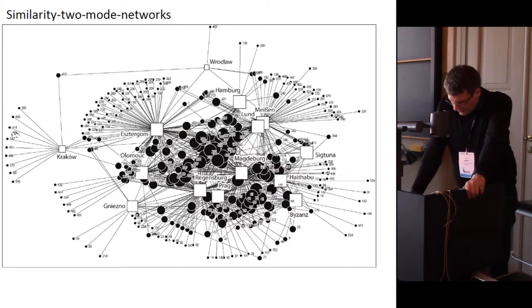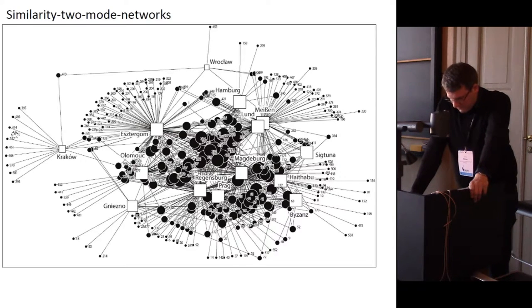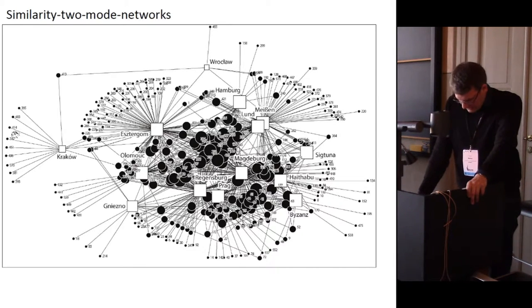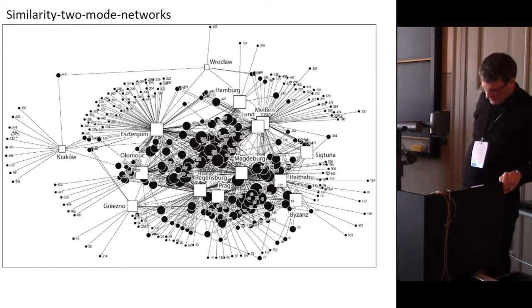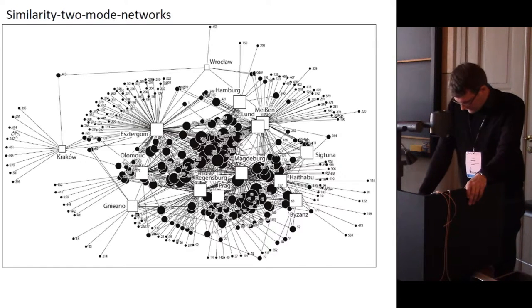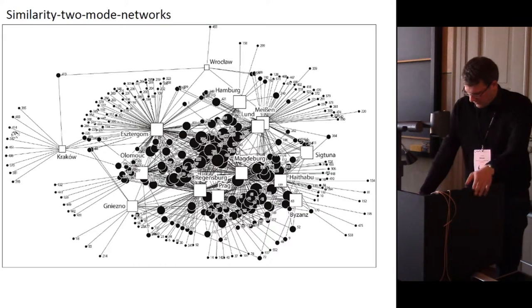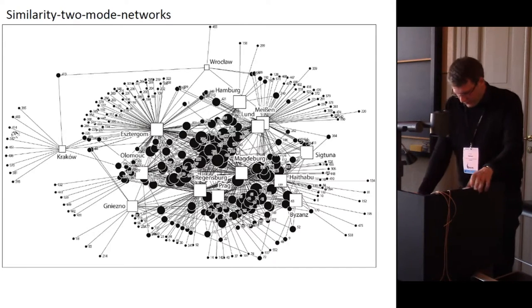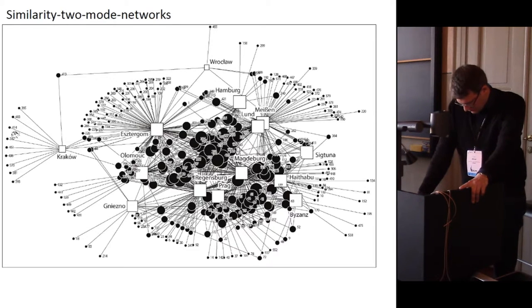Another possibility for generating networks, other than through neighborhood networks based on physical distance, is through similarities of the composition of coin finds. The individual coin hoards are allocated to coining sites in case they contain coins from them. If there are coins from Prague and Regensburg in one coin hoard, the dot symbol is connected to the box symbol for the mints of Prague and Regensburg. The similarity between the nodes is expressed through the number of connections. Nodes — here coin hoards and coining sites — which are more strongly connected lie closer to each other than those which are lesser or not connected. Thanks to the topology, one can see which nodes have similar characteristics and which have a weak or strong position. On this basis, one can see that Regensburg and Prague had close contact. There are also many coin hoards which contain coins from Esztergom as well as those from Olomouc, indicating strong exchange and communication relations between both places.